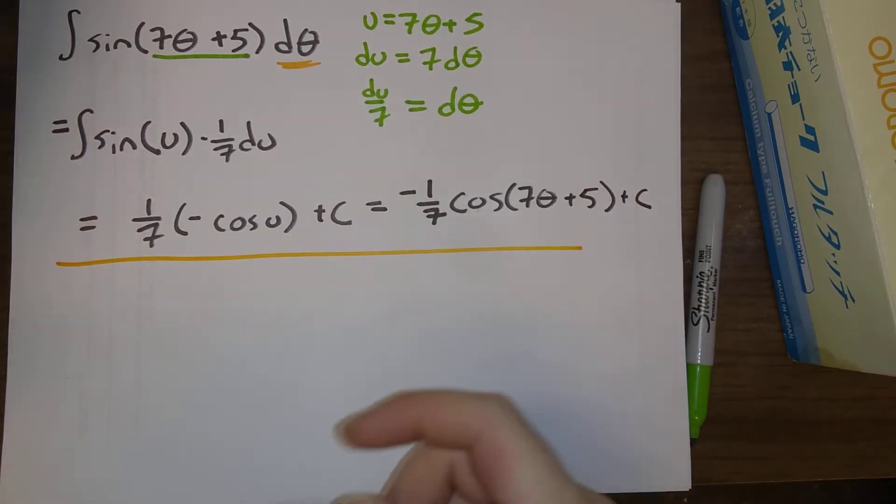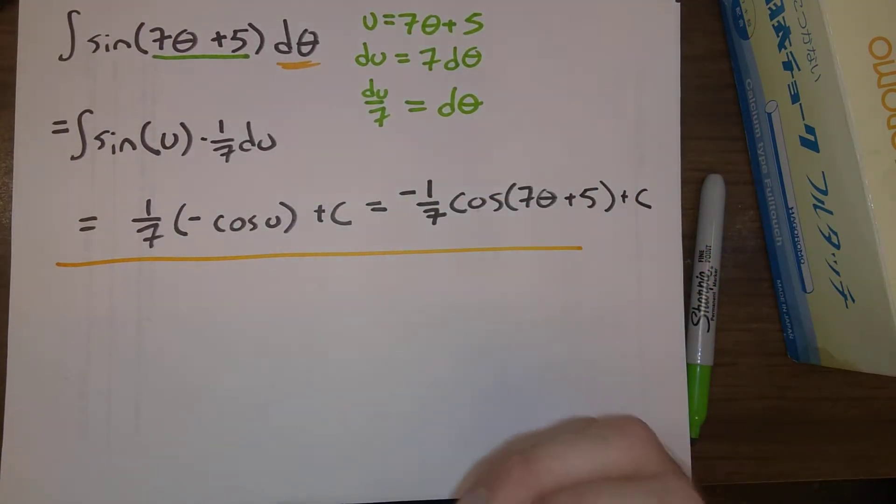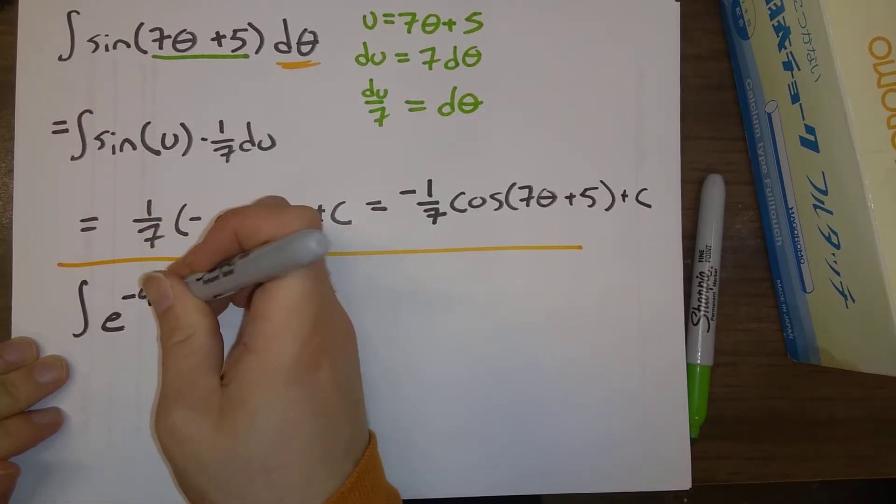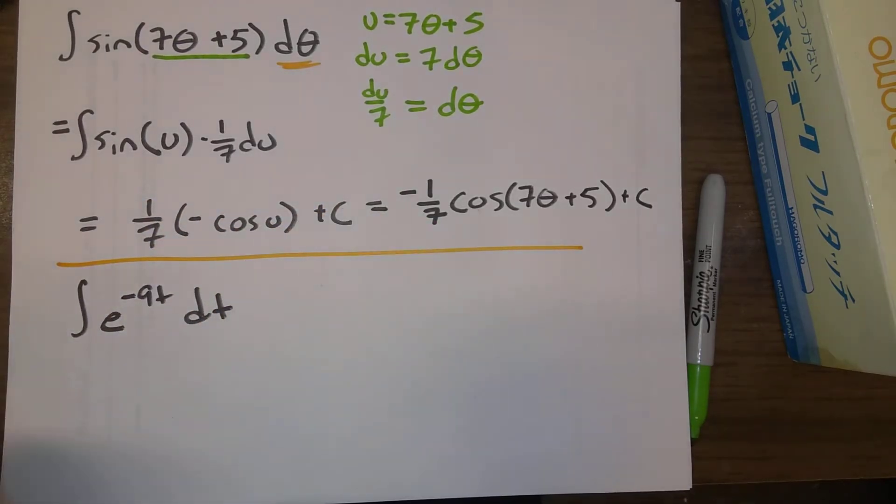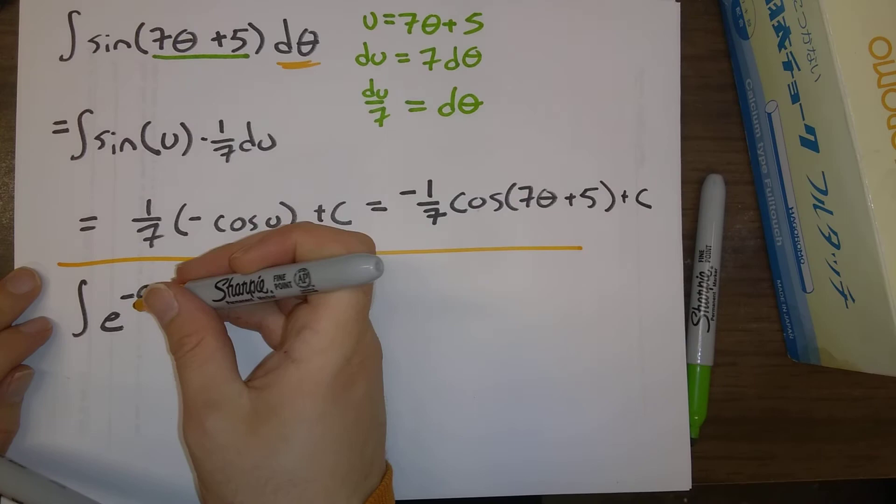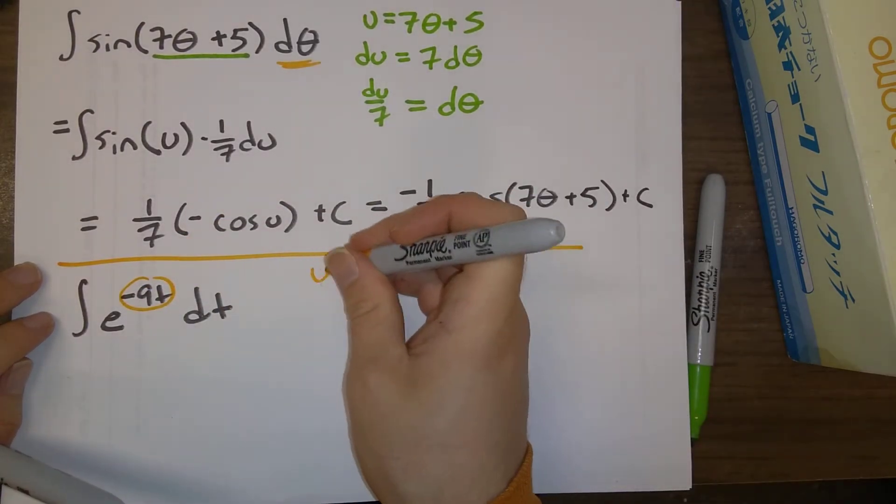Similarly, let's do an example involving an exponential function, e to the minus 9t dt. I think that, again, we kind of saw how to reverse engineer this, but we don't want to reverse engineer. We want to do it a little bit more systematically with substitution.